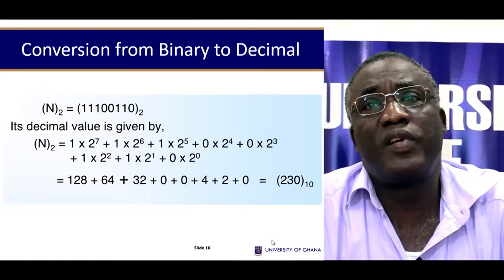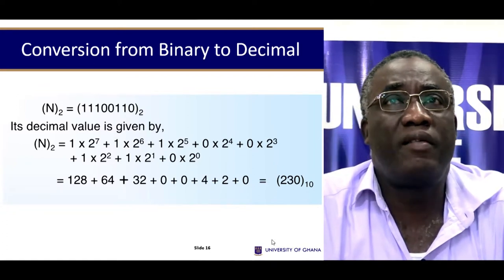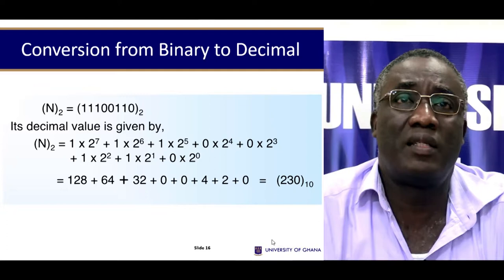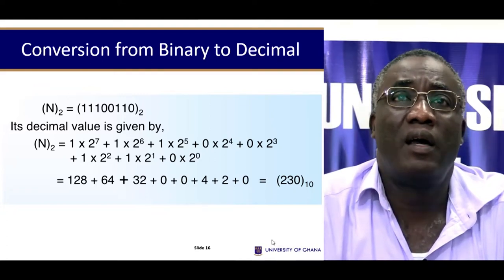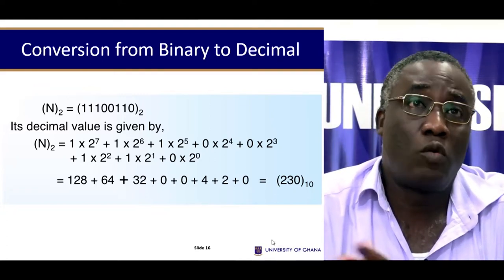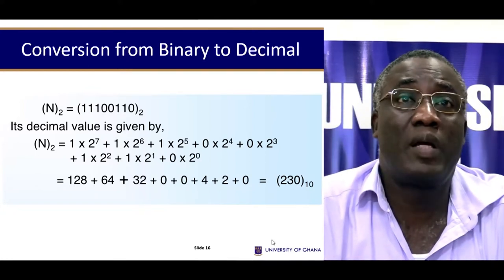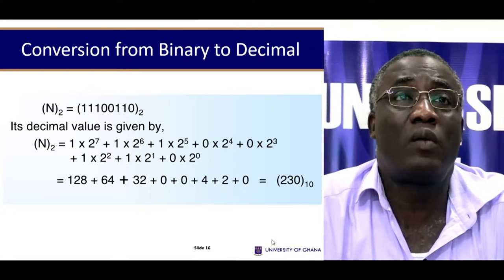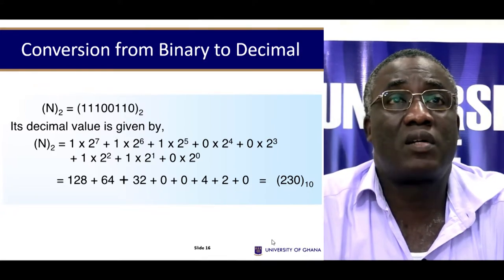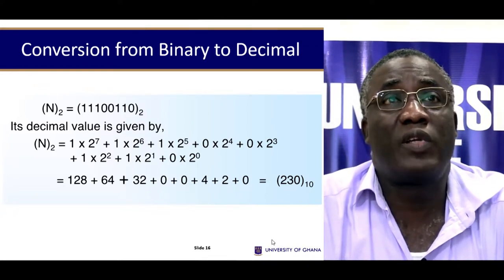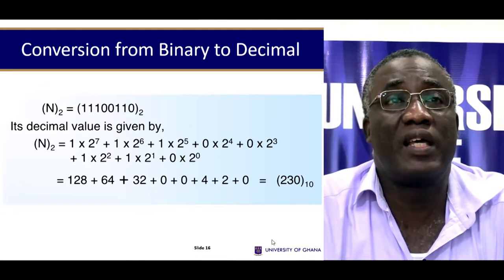How do you convert a binary number to a decimal number? That's quite easy — simply write down the binary number and multiply by powers of 2. For example, take the number 11100110. If you count the digits: 1, 2, 3, 4, 5, 6, 7, 8 — there are 8 digits.